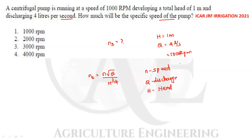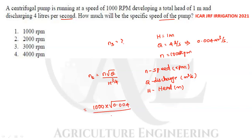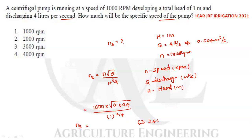Speed should be in rpm, discharge Q in cubic meters per second, and total head in meters. Converting 4 liters per second gives 0.004 m³/s. Substituting: Ns = 1000 × √0.004 / 1^(3/4). Calculating this gives a specific speed Ns equal to 63.245 rpm.